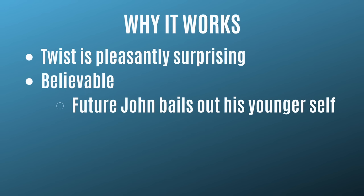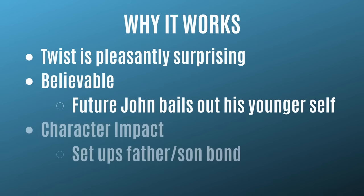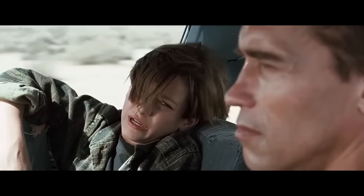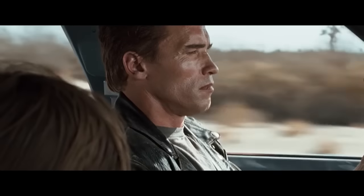One other reason it works is character impact. This twist introduces the T-800 as a protector, and over the course of the story the machine acts as a father figure toward John.